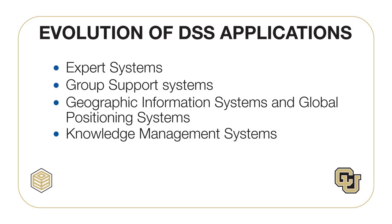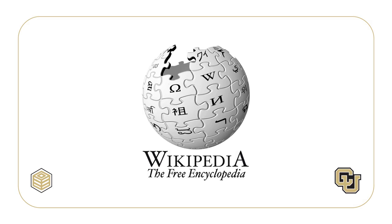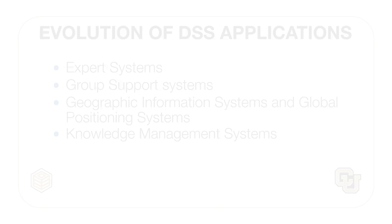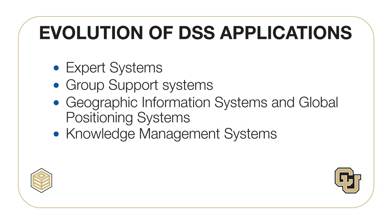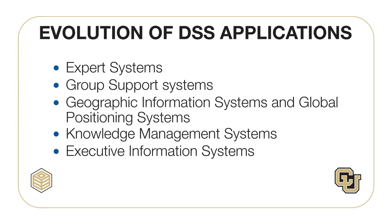A knowledge management system can be used to identify similar past situations and how they were handled. Wikipedia is a KMS which many people use on a daily basis. Companies use internal wikis to post policies and procedures associated with employment, memos, and internal documents. Executive information systems are used to access news, stock prices, and information about competitors, customers, key performance indicators, and internal operations using dashboards and scorecards.